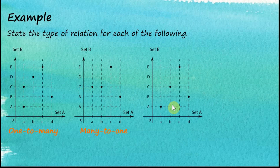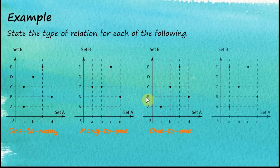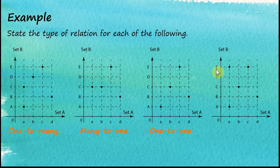And this one is quite obvious: one object, one image, one object, one image, one object, one image, one object, one image. This is one-to-one. And the last one, we can see that we have one object mapped to two images — A and E. And at the same time, two objects A and C are both mapped to E, so two objects to one image. Therefore, this is many-to-many.